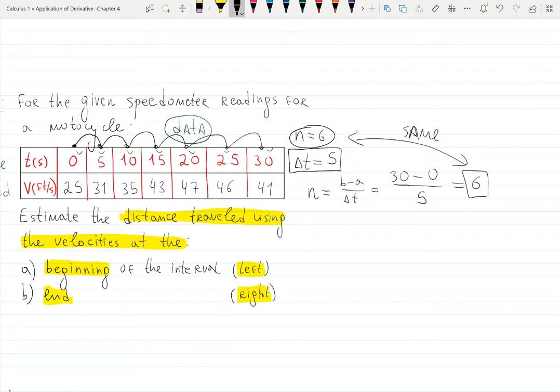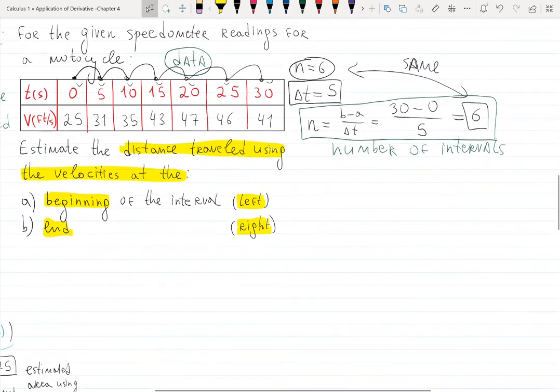So either you calculate by hand if we don't give you too many, but if we give you 25 intervals, that's going to be hard to calculate by hand. Then you use the formula. That's the number of intervals. In this case, change in time, we have six intervals. Let's do it.